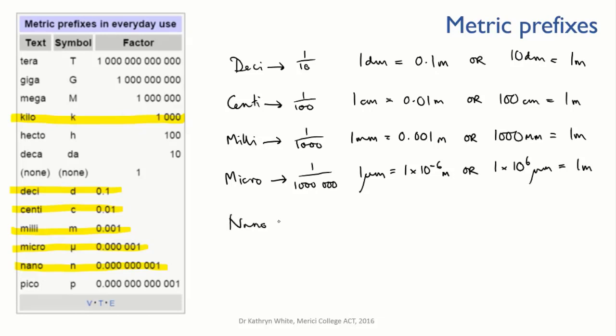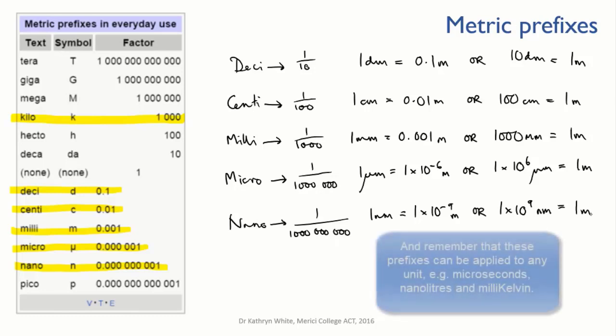And finally, nano means one billionth. So a nanometer is 1 times 10 to the minus 9 meters. Or we can say that there are 1 times 10 to the 9 nanometers in a meter. Make sure you're familiar with these prefixes. You'll encounter them frequently.